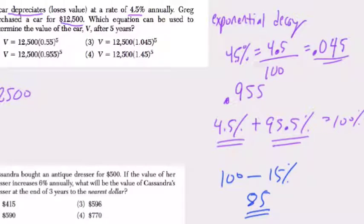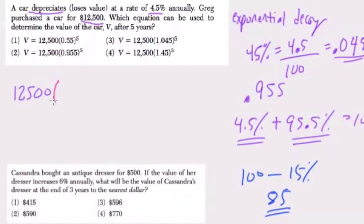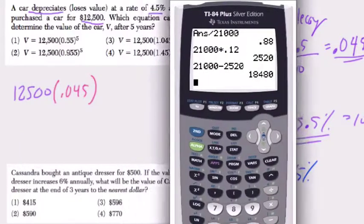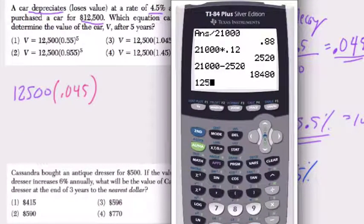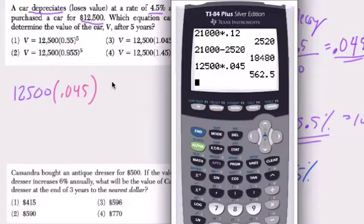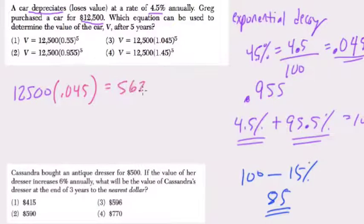Now, with this process, if we're not recognizing that, we can just calculate. So we can do 12,500 times 0.045, or 4.5%. What's going to happen? Well, let's take a look. 12,500 times 0.045, and you get this number, 562.5.